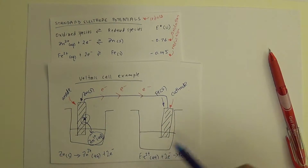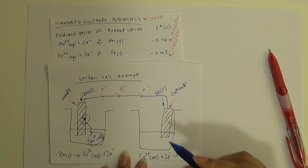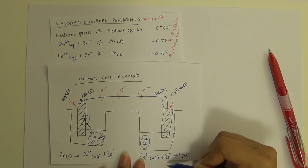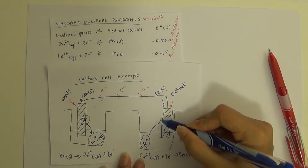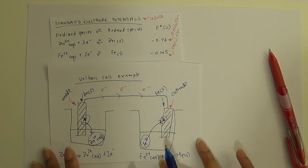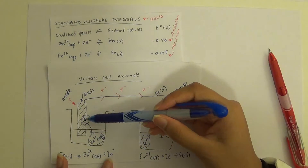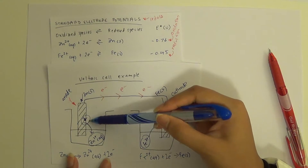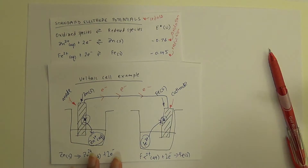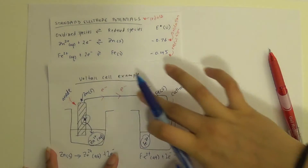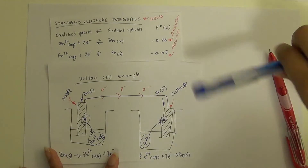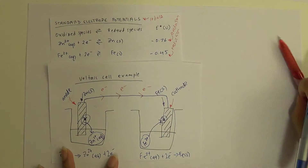At the cathode, Fe²⁺ ions in solution gain two electrons and form iron solid, joining the electrode. You've also got to notice that the anode cell is becoming more and more positive as zinc dissolves, which may prevent further electron transfer as the cell continues. Therefore, we need something called a salt bridge.